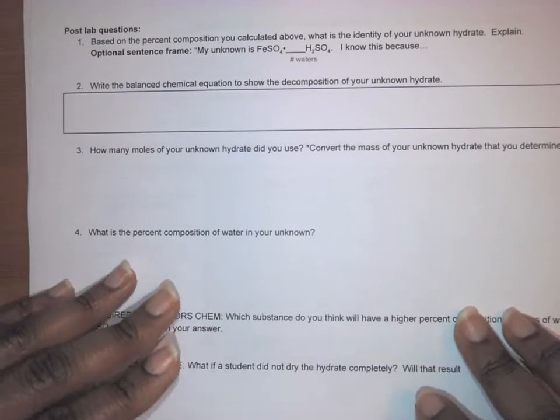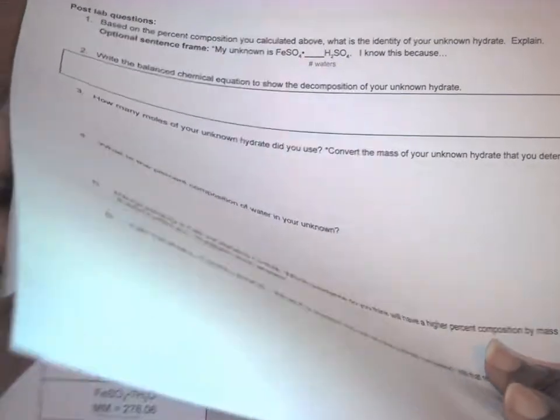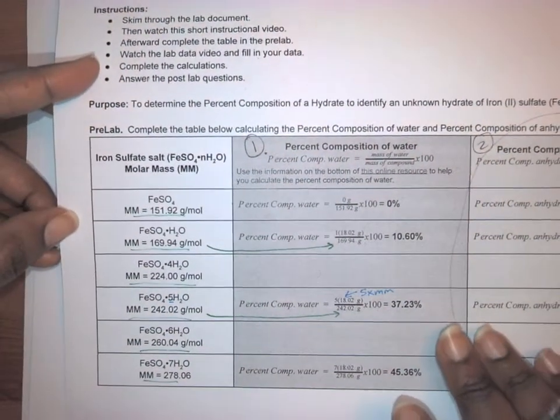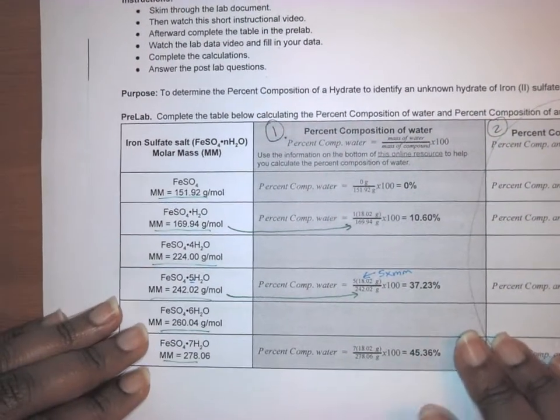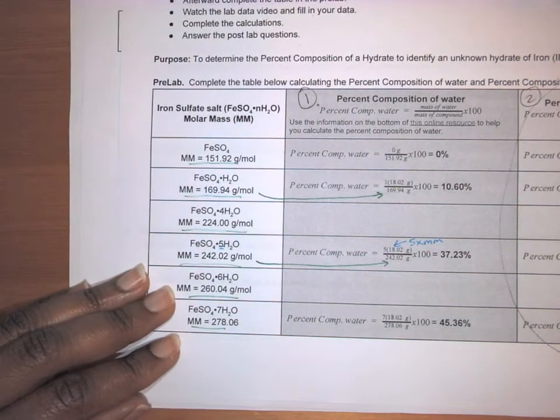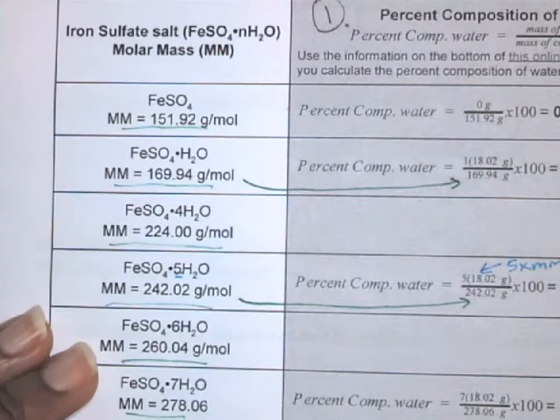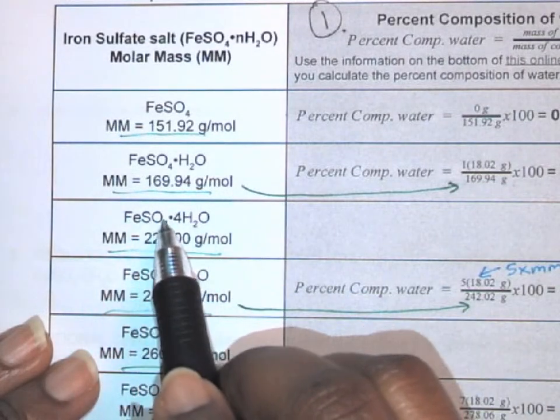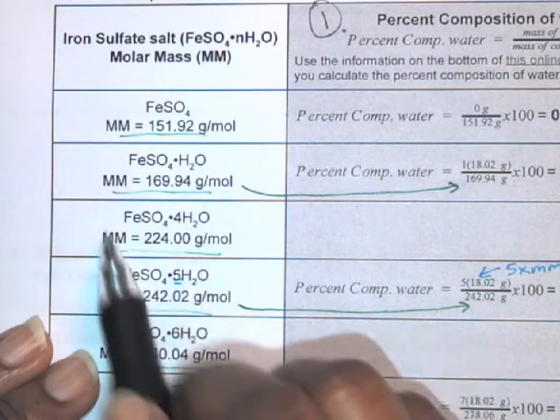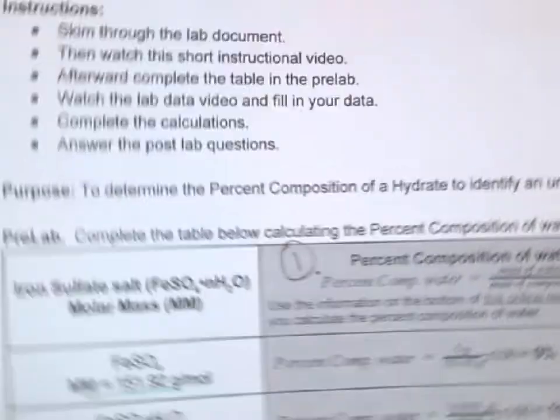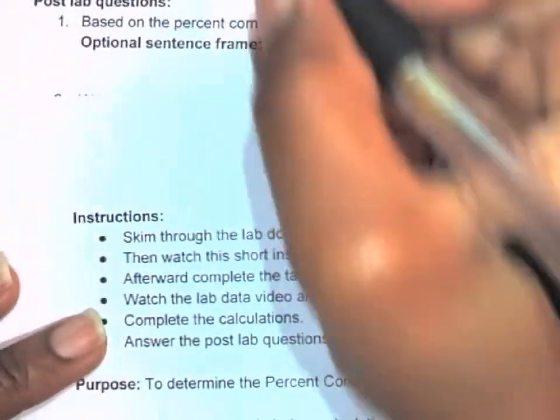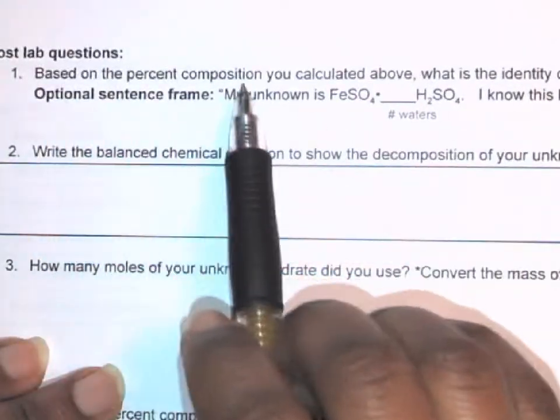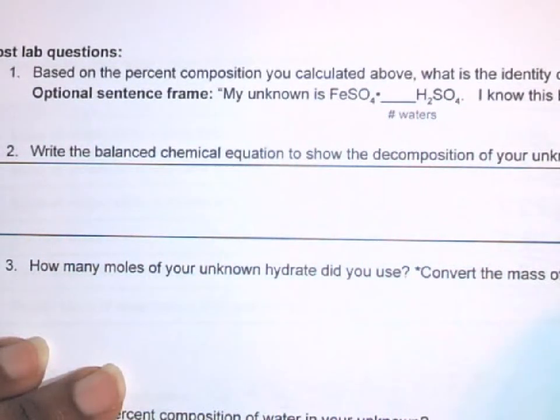So let's say for example, you determine from your data that your unknown was this one right here. The iron sulfate tetra, tetra means four, hydrate. So the iron sulfate with the four waters. So let's say I'm gonna write that at the top. Actually I'm gonna write it in optional question here. So based on the percent composition, what is the identity of your unknown hydrate?